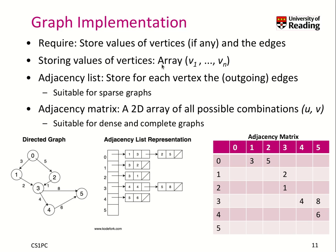Well, it's easy. We just use an array and we enumerate all the nodes from 0 to n minus 1, if we have a graph that consists of n many — in this case, six — vertices.